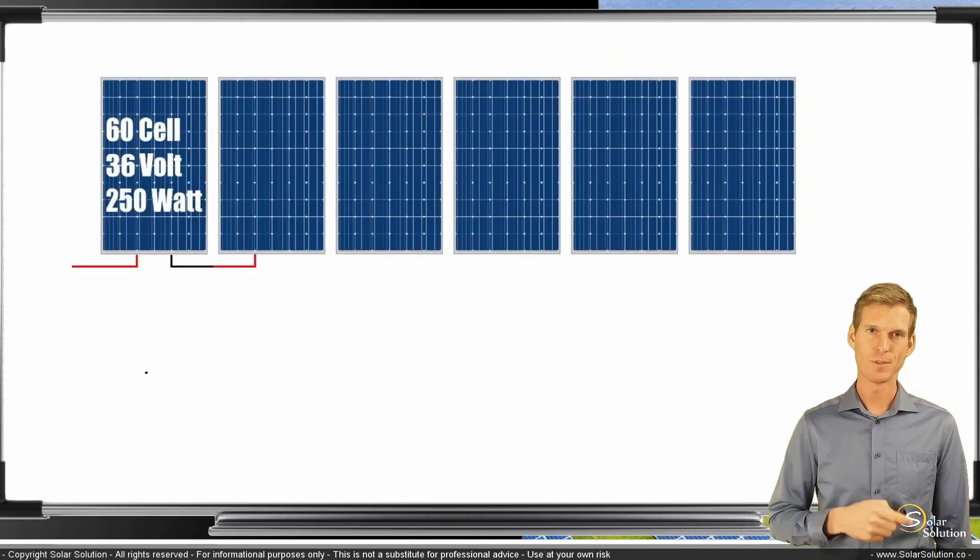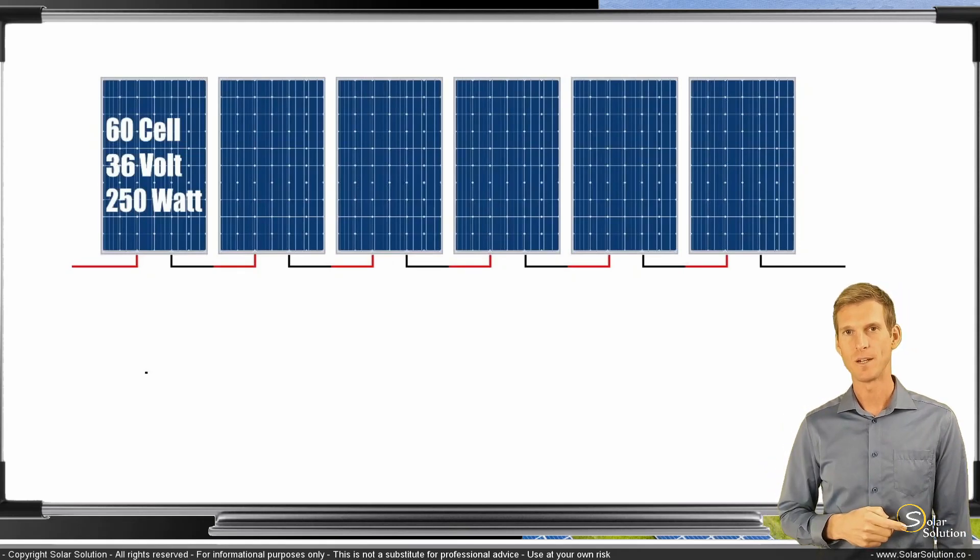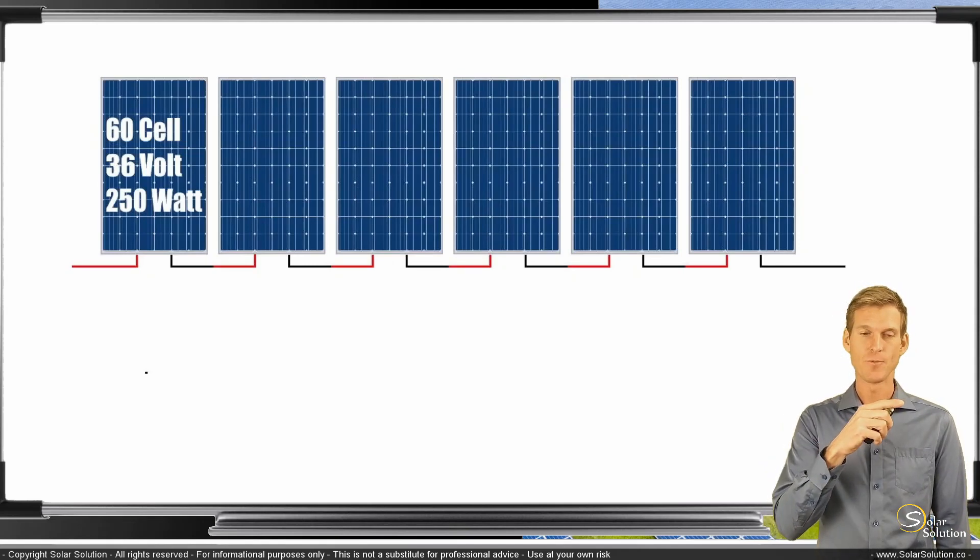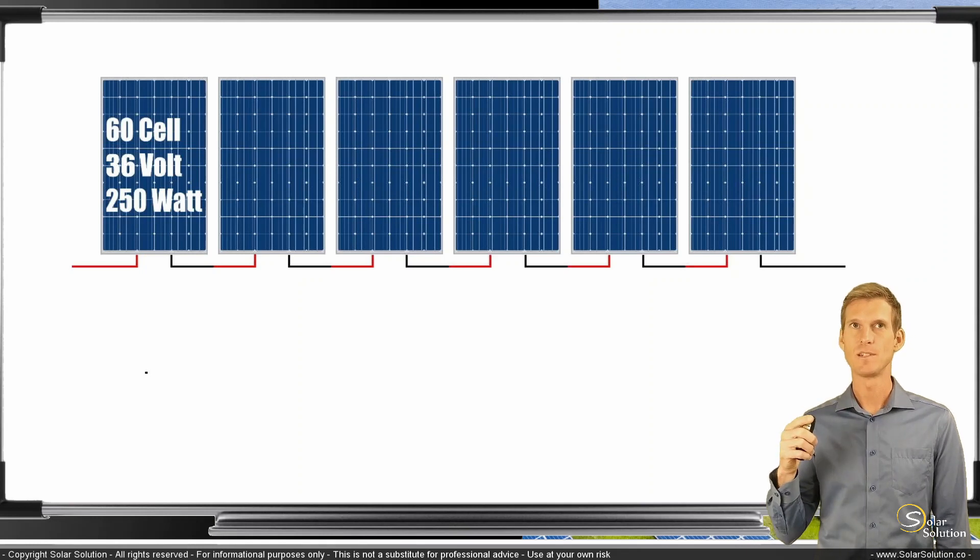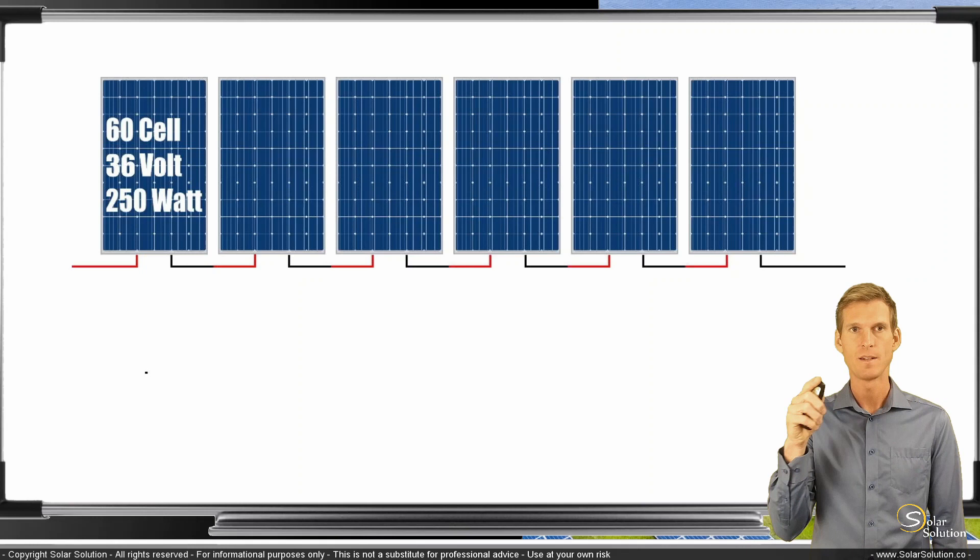And you connect a negative output of the second panel to the positive input of the third panel. Now you continue like this, so you always connect the negative to the positive. Now if you connect these six panels together in one loop, in one string, in one series connection,